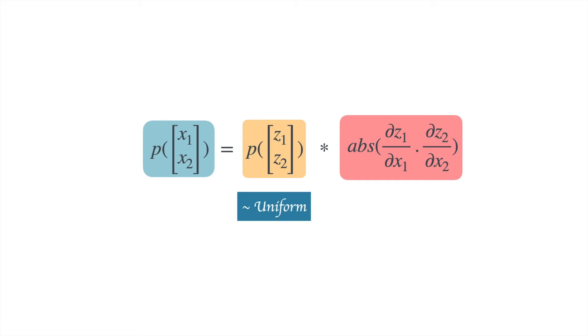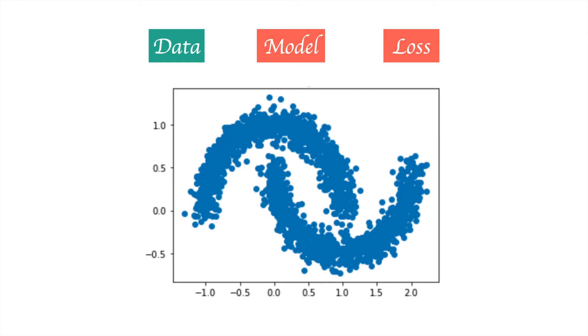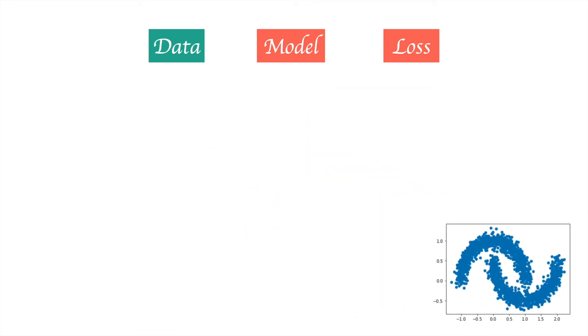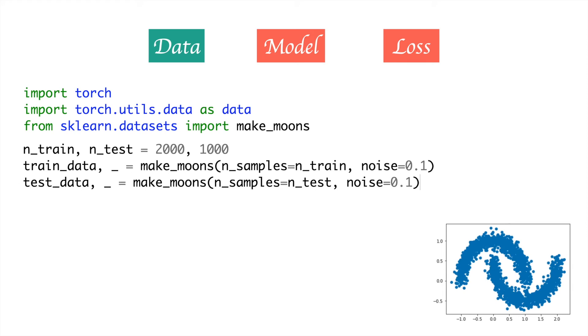The basic idea behind maximizing the log likelihood is the same. We define p(z1, z2) to be uniform, which means that's what we want to get. To be more precise, we want to find a function which maps x to z such that z is as close to uniform as possible. Now let's look at the implementation of normalizing flows for 2D data. This is what our 2D data looks like - it looks like two crescents. This can be created easily using an API from sklearn. We will use 2000 samples for training set and 1000 samples for testing set.